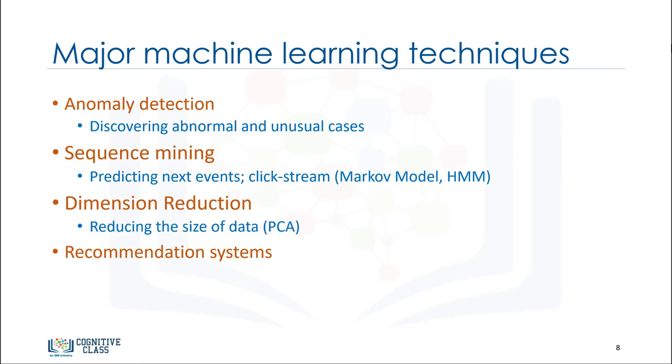Dimension reduction is used to reduce the size of data. And finally, recommendation systems. This associates people's preferences with others who have similar tastes and recommends new items to them, such as books or movies. We will cover some of these techniques in the next videos.